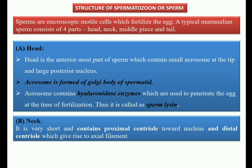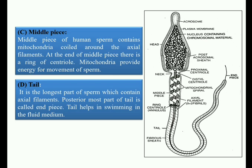The neck is the second part of the sperm. It is very short and is present between the head and middle piece. The neck contains two centrioles: the proximal centriole, located near the nucleus, and the distal centriole, which gives rise to the axial filament.